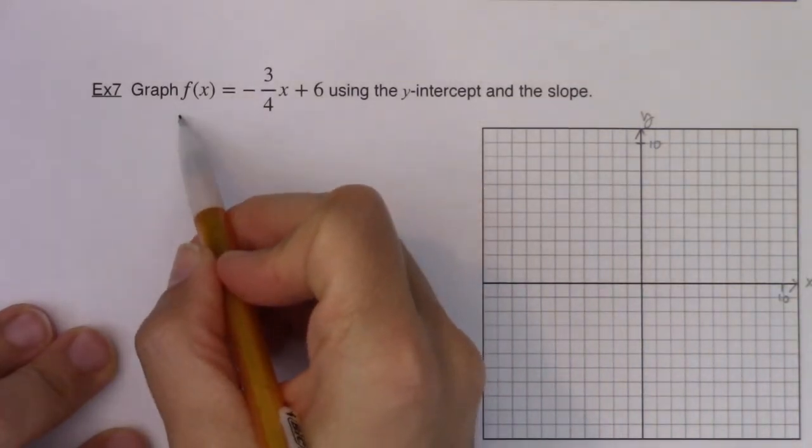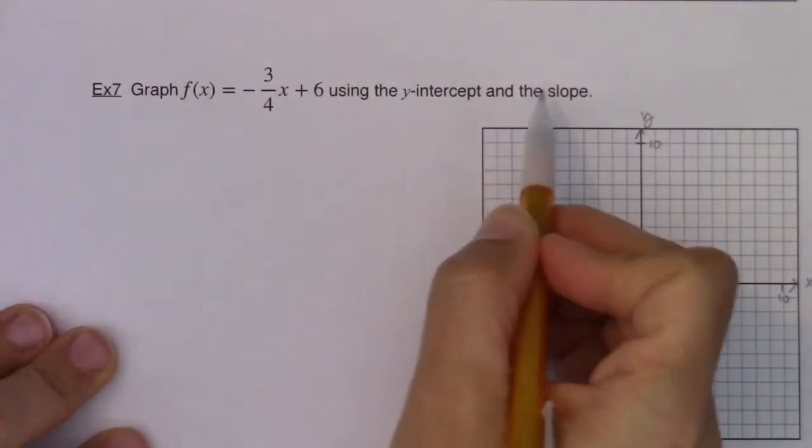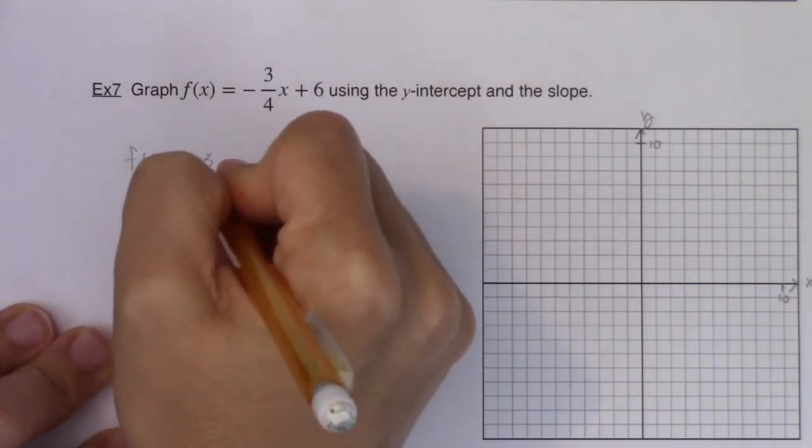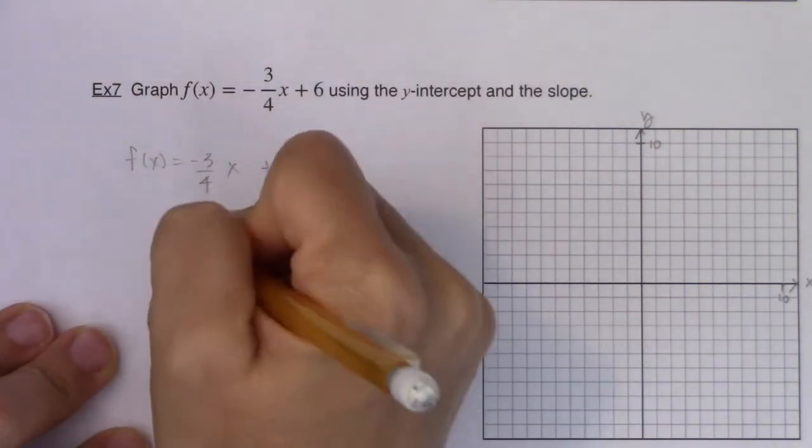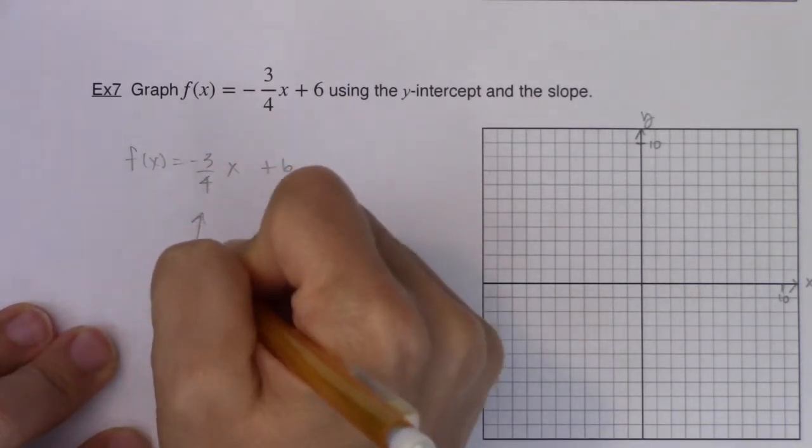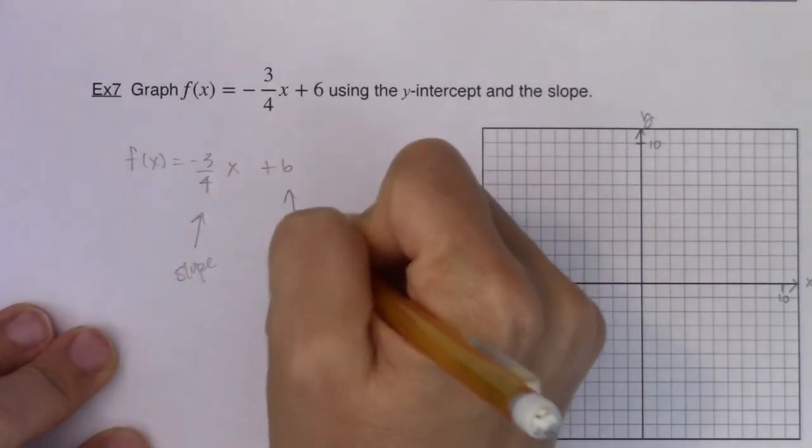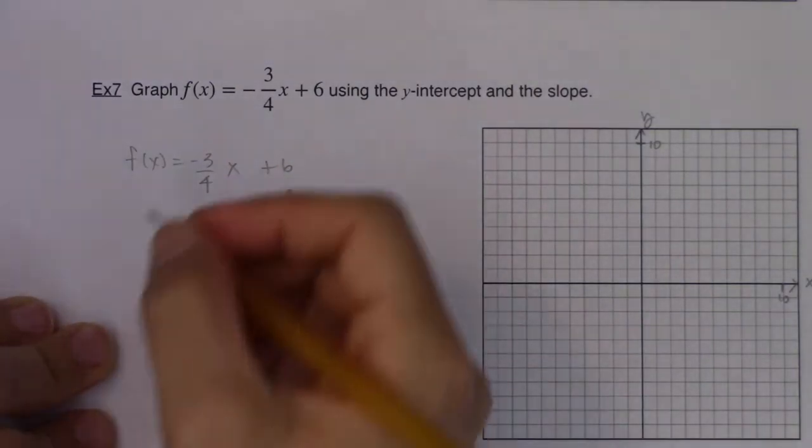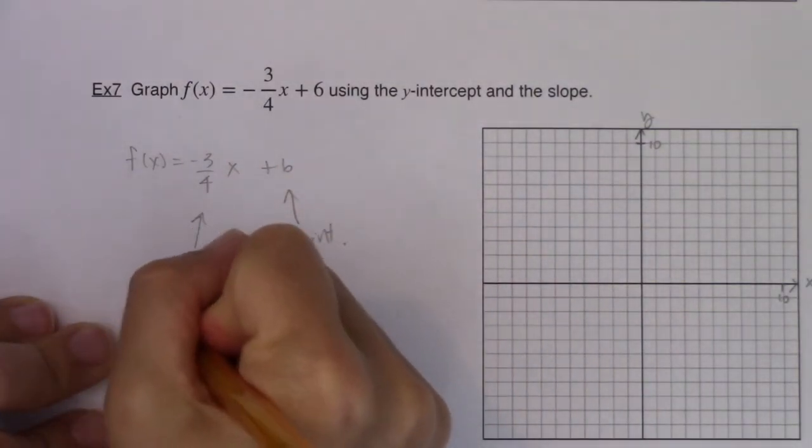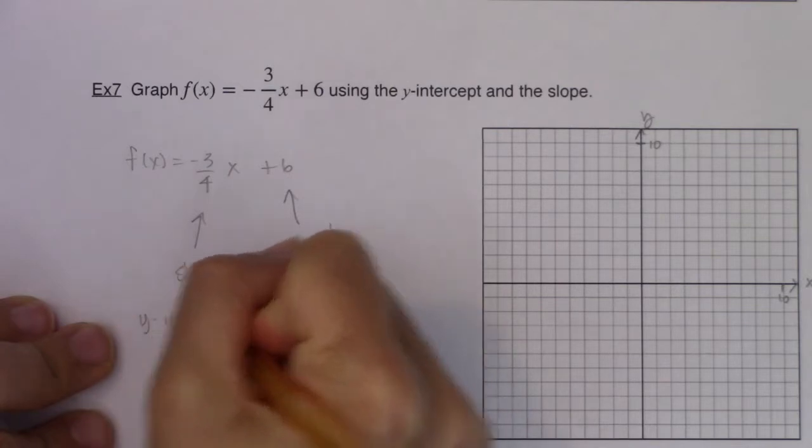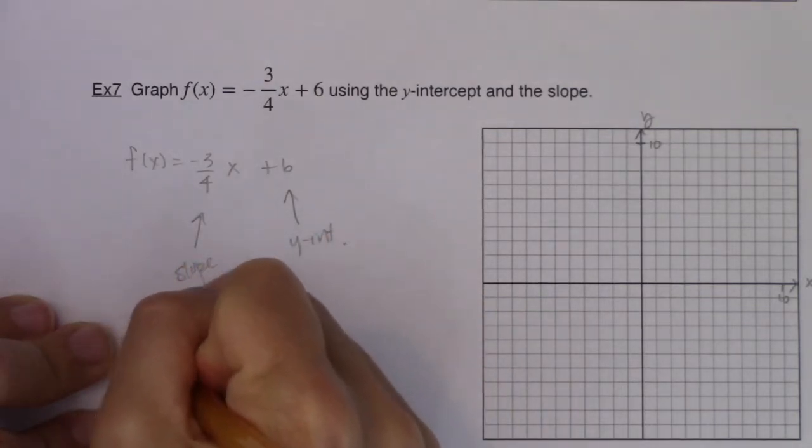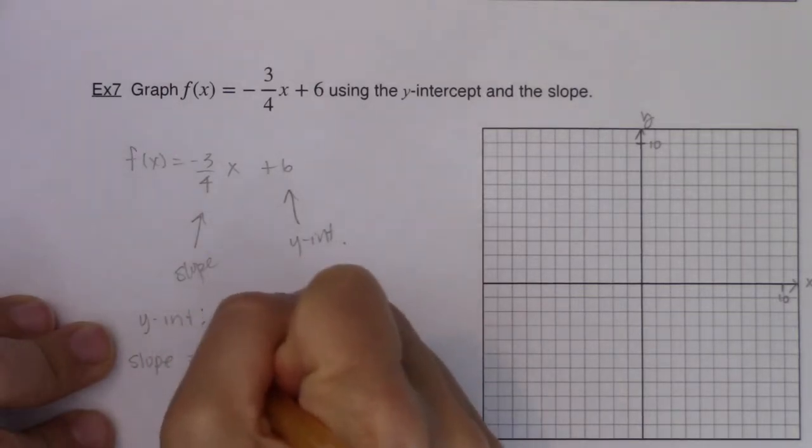Now this says graph this function using the y-intercept and the slope. For this function, if we have negative three-fourths x plus six, this is going to tell you about the slope, and this is going to help you with your y-intercept. Let's start with my y-intercept. My y-intercept is the point 0,6. And my slope is the fraction negative three over four.